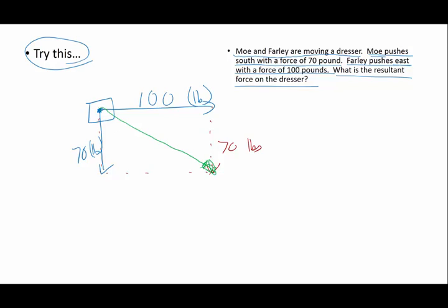And I have to determine size and direction. So size is going to be Pythagoras, a squared, b squared, square root is going to be c, and I'm going to do that with my calculator. 100 squared plus 70 squared equals square root. I get a resultant force of 122 pounds.